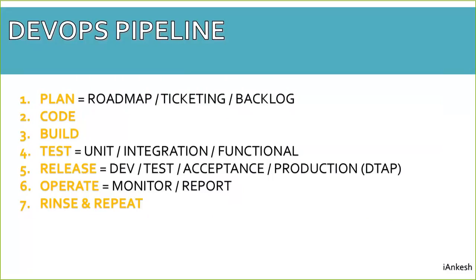Then comes the test step, where there will be different types of tests like unit testing, integration testing, and functional testing. After that, release — it will get released into different environments like test, acceptance, and production. After it is successfully released, we operate on it, which means monitoring, reporting, logging, etc. And then rinse and repeat — once everything is done, it repeats when the next build of code is pushed into the repository.